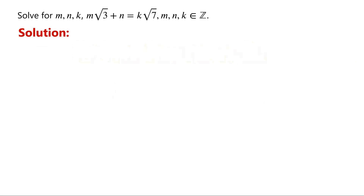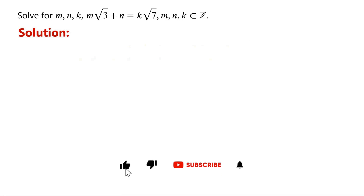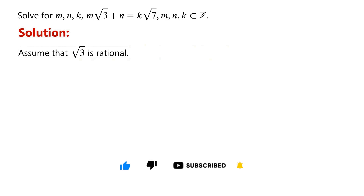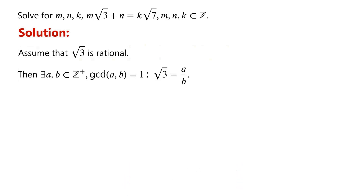The equation contains √3 and √7. Before solving this equation, we will prove that √3 and √7 are irrational numbers. Let's assume that √3 is rational. Then there exist positive integers a and b, and the greatest common divisor of a and b is 1, such that √3 = a/b.